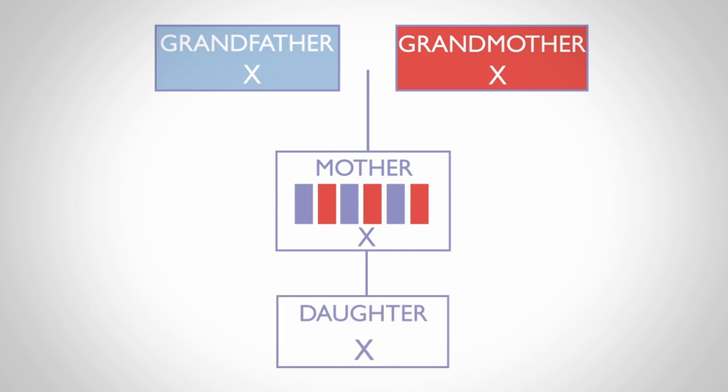The significant points to draw from these principles are that autosomal DNA is inherited from all of our recent ancestors. X DNA is inherited from some, but not all of our ancestors. And Y DNA is inherited only by an unbroken line of male ancestors.